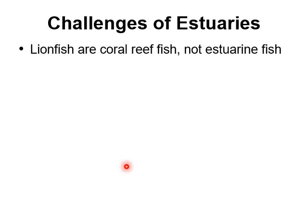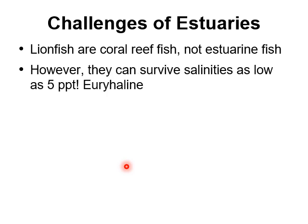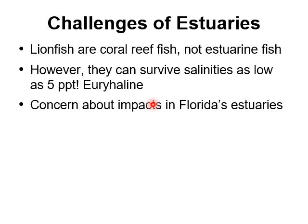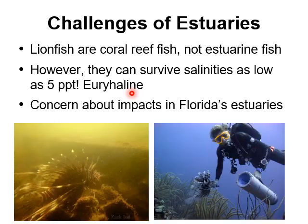Lionfish are an interesting example here. Because they're typically coral reef fish, we would expect them to be stenohaline — able to survive only a narrow range of salinities, since coral reefs have very stable salinity. However, it's been found that invasive lionfish can live in salinities as low as five parts per thousand, making them apparently euryhaline. This is very surprising and concerning because lionfish can also have negative effects on estuaries, particularly in Florida.